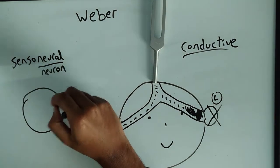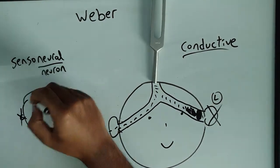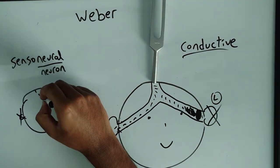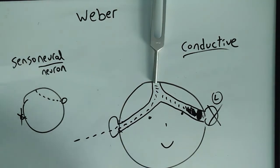So for sensorineural hearing loss, there's no neuron going to the bad ear, so the sound lateralizes to the good ear. For conductive hearing loss, there's a blockage, so the sound lateralizes to the bad ear.